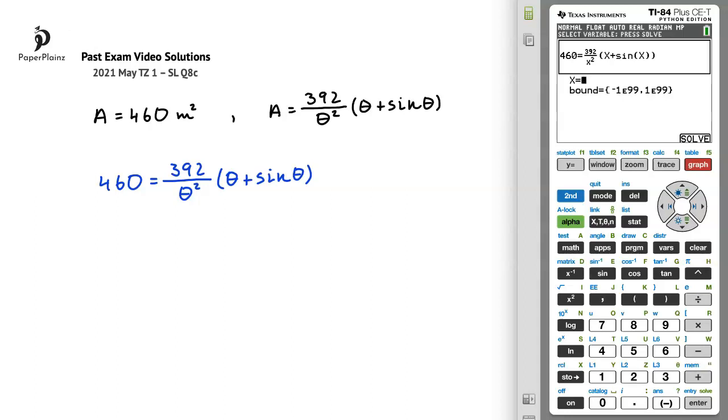We know, based on the diagram and the information in the question, that theta must be between 0 and pi. Even though the diagram is not to scale, we can probably assume that theta is closer to 0 than to pi. So my educated guess for the value of theta, so the value of x here, will be 1.